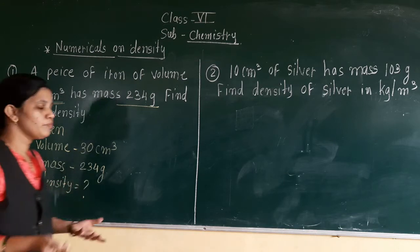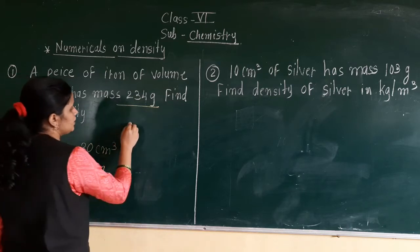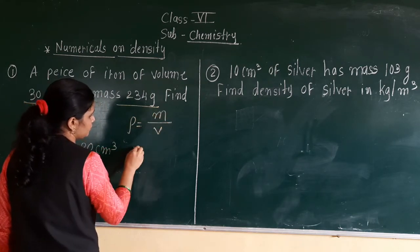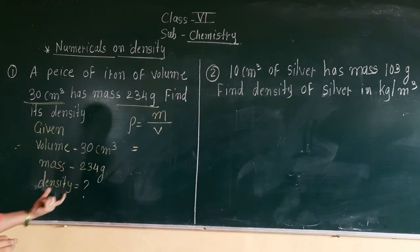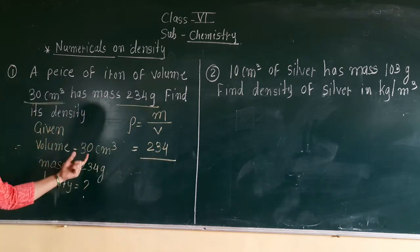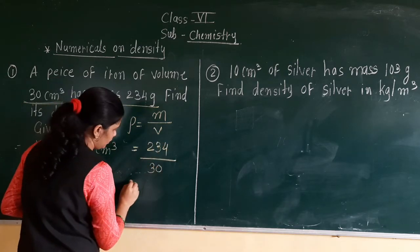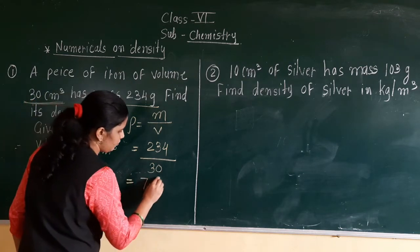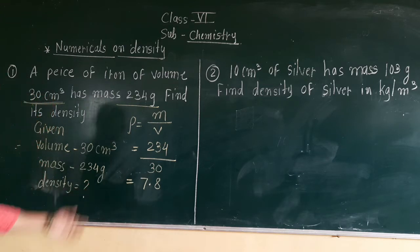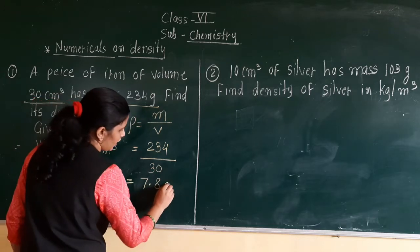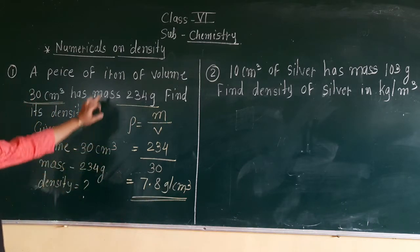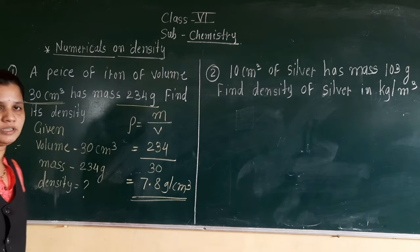As you know, what is the formula of density? Density, denoted by rho, equals mass divided by volume. So mass is 234 divided by volume 30. The answer is 7.8. Now the unit is important — both are in CGS units, gram and centimeter, so the unit is gram per cm cube. The density of the iron piece is 7.8 gram per centimeter cube.